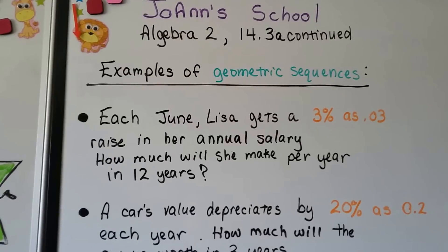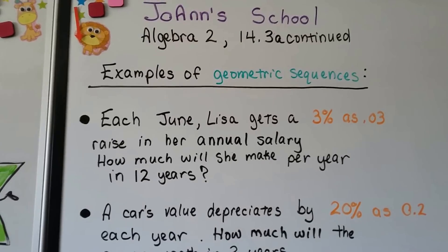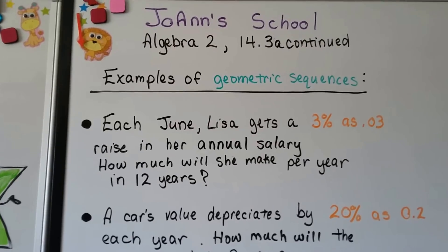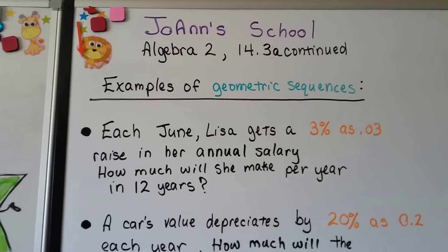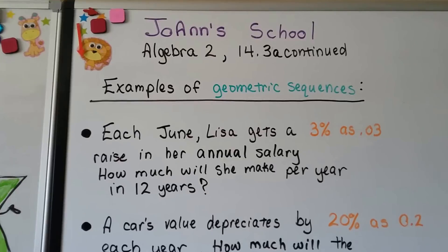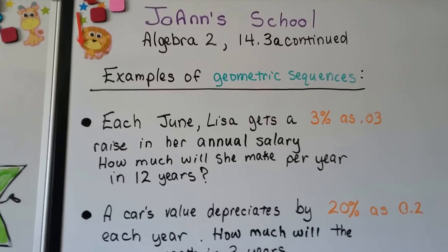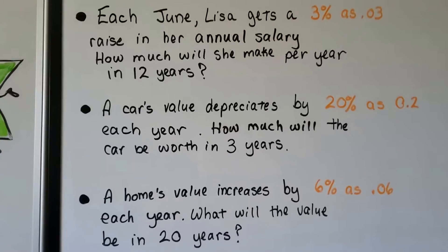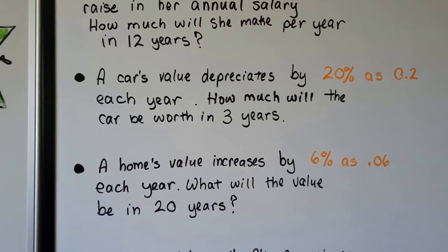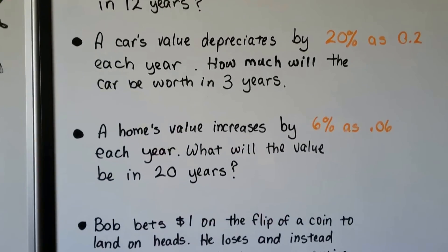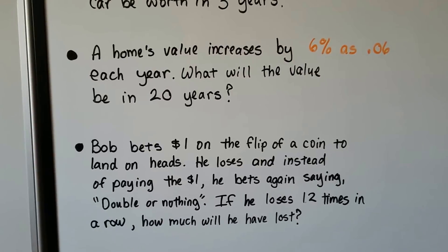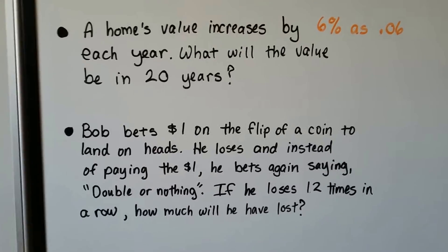Each June, Lisa gets a 3%, which would be .03 as a decimal, raise in her annual salary. How much will she make per year in 12 years? We're going to be working with the nth term of a geometric sequence in the next video. Or a car's value depreciates by 20% as .2 each year. How much will the car be worth in three years? Or a home value increases by 6% as .06 each year, and you want to figure out the value in 20 years.